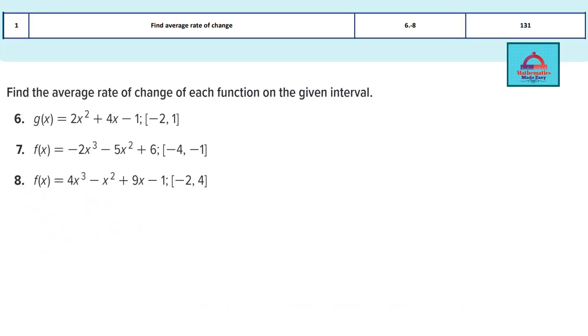In this video we are going to be solving these 3 questions, question 6, question 7 and question 8 which are from your exam coverage part 1, learning objective 1 where we have to find the average rate of change. These questions are given in your math book on page 131 so you can refer to the following when you are solving the questions.